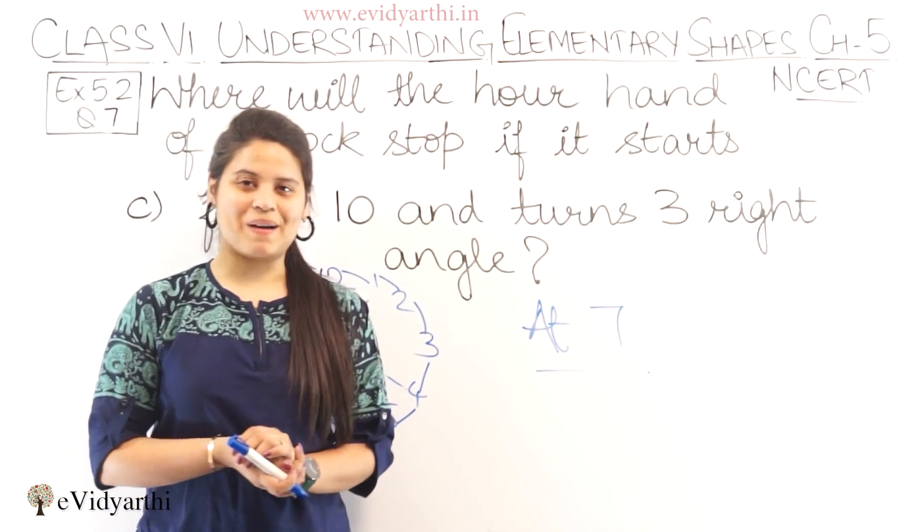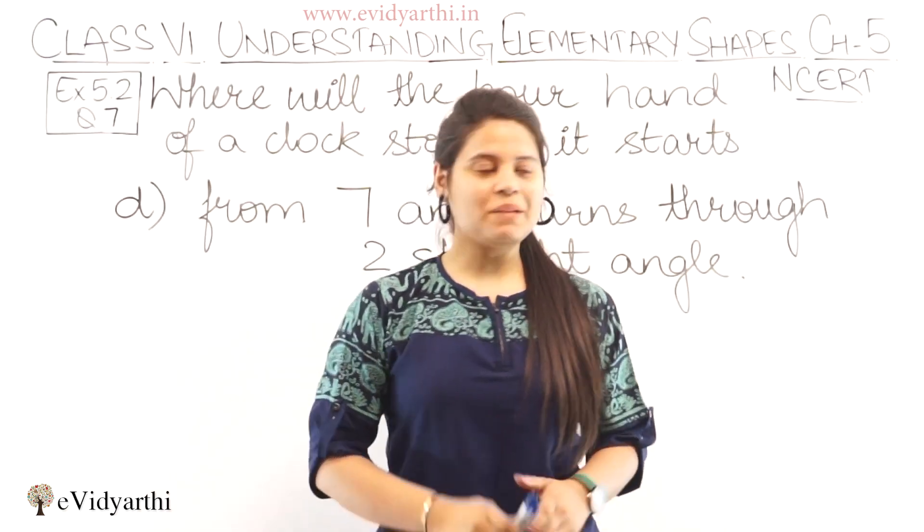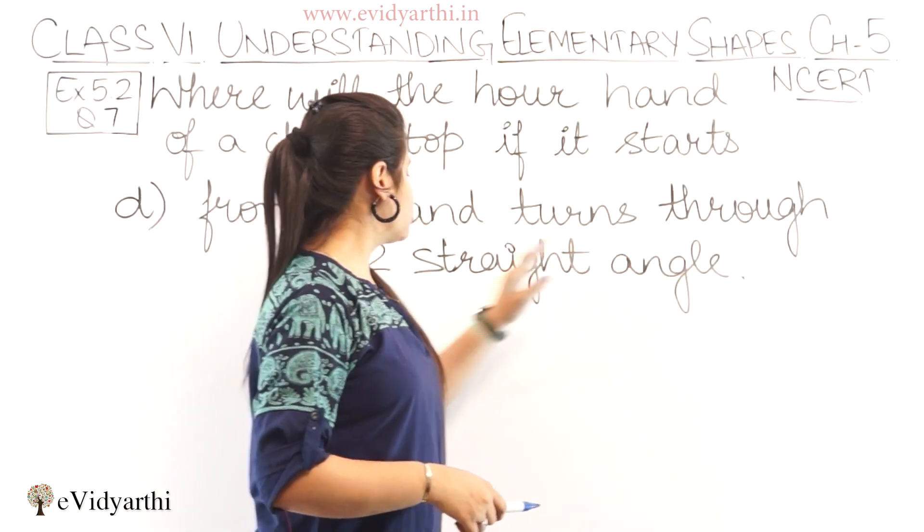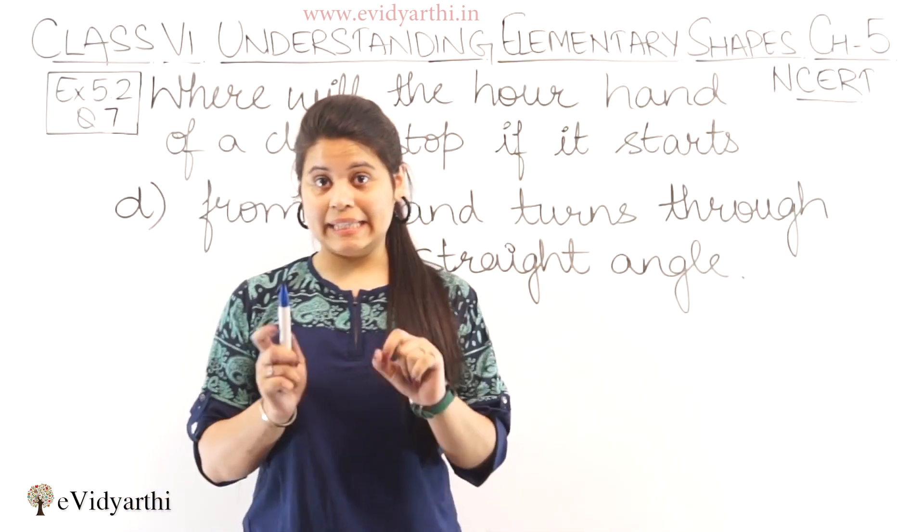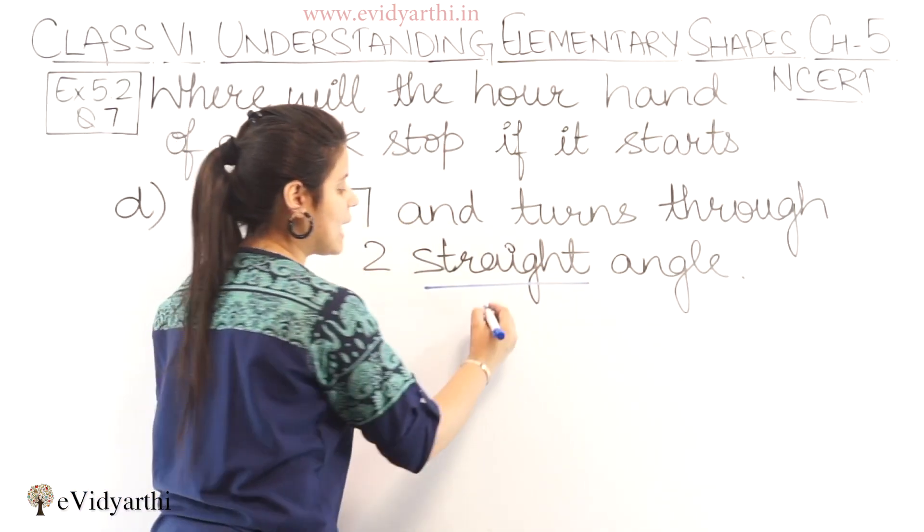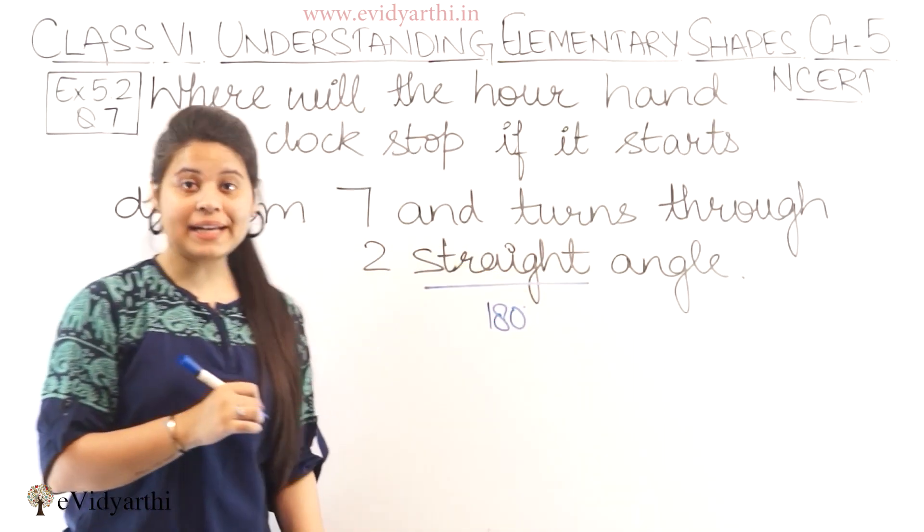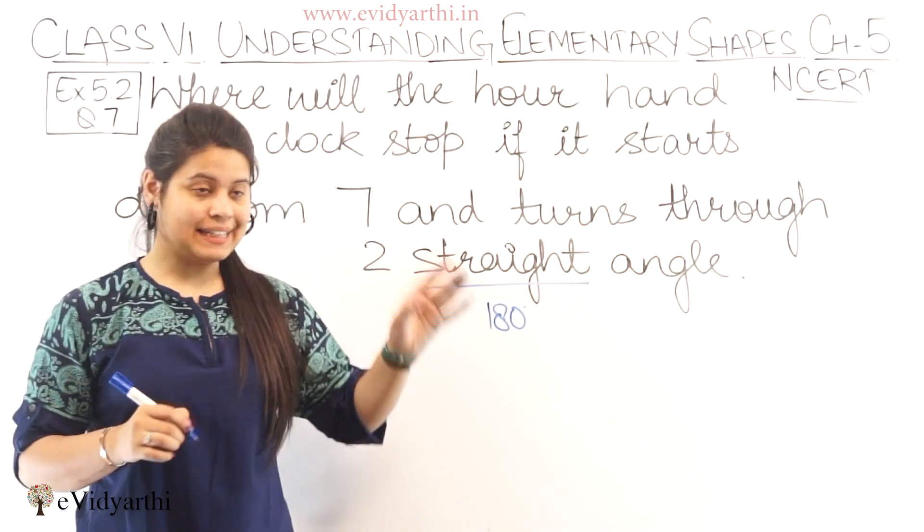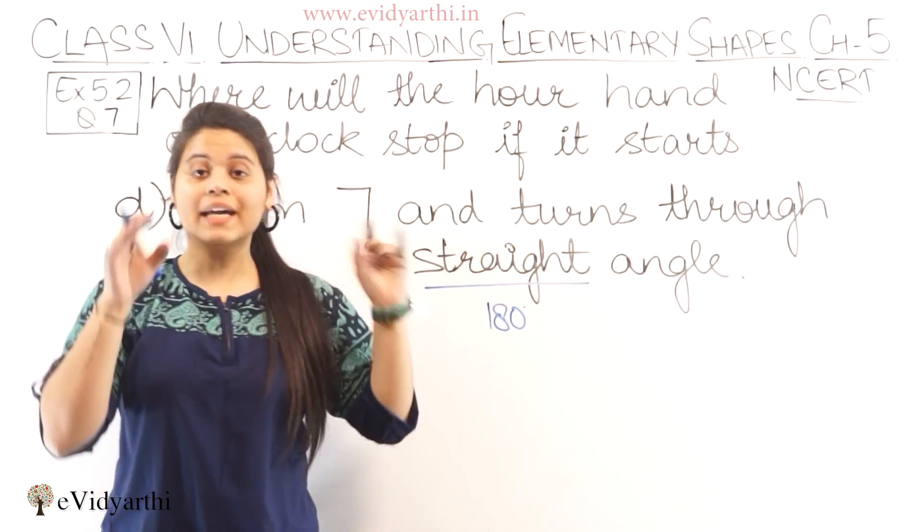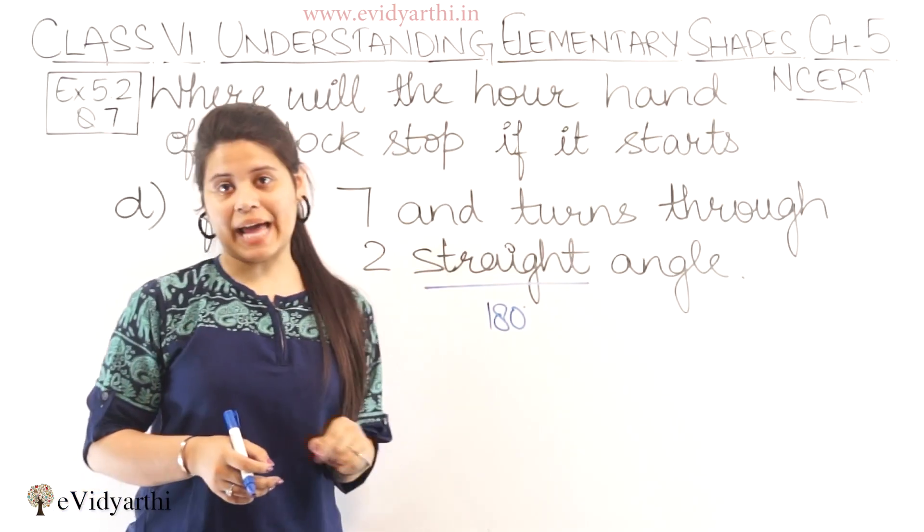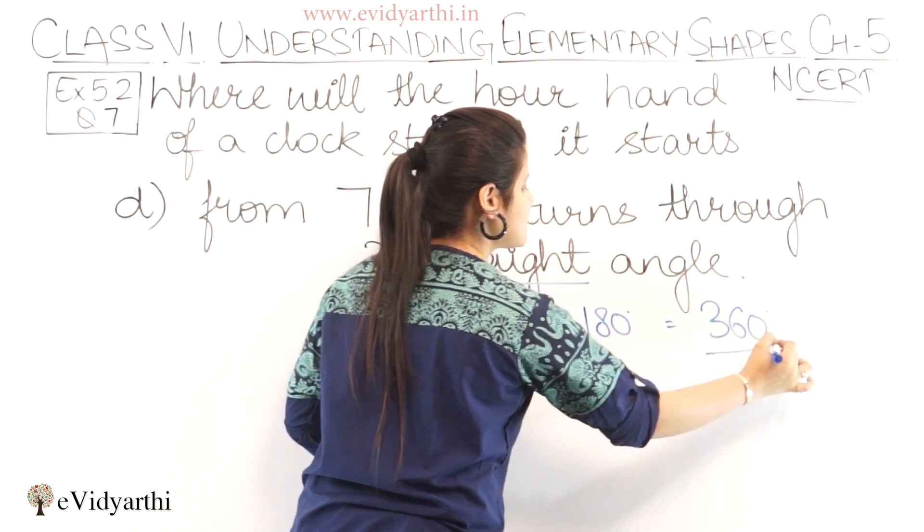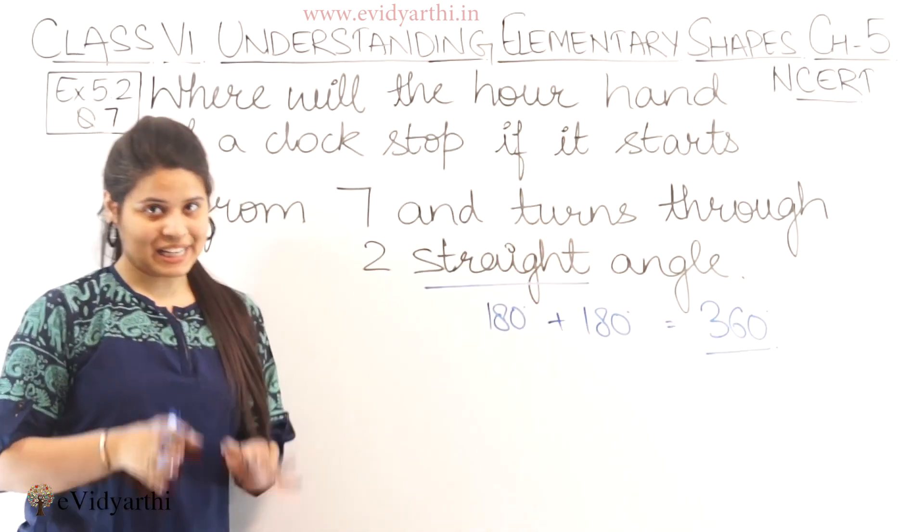So this was our third part. Let's come to the next part. Now coming to the D part. D part has from 7, means start from 7 and turns through two straight angles. Here note carefully, we are given straight angle, not right angle. Straight angle is 180 degrees. Right angle is 90 degrees. Just like 2 right angles together make one straight angle, that means 90 plus 90 equals 180. Similarly, when we take 2 straight angles, 180 plus 180 will make 360.